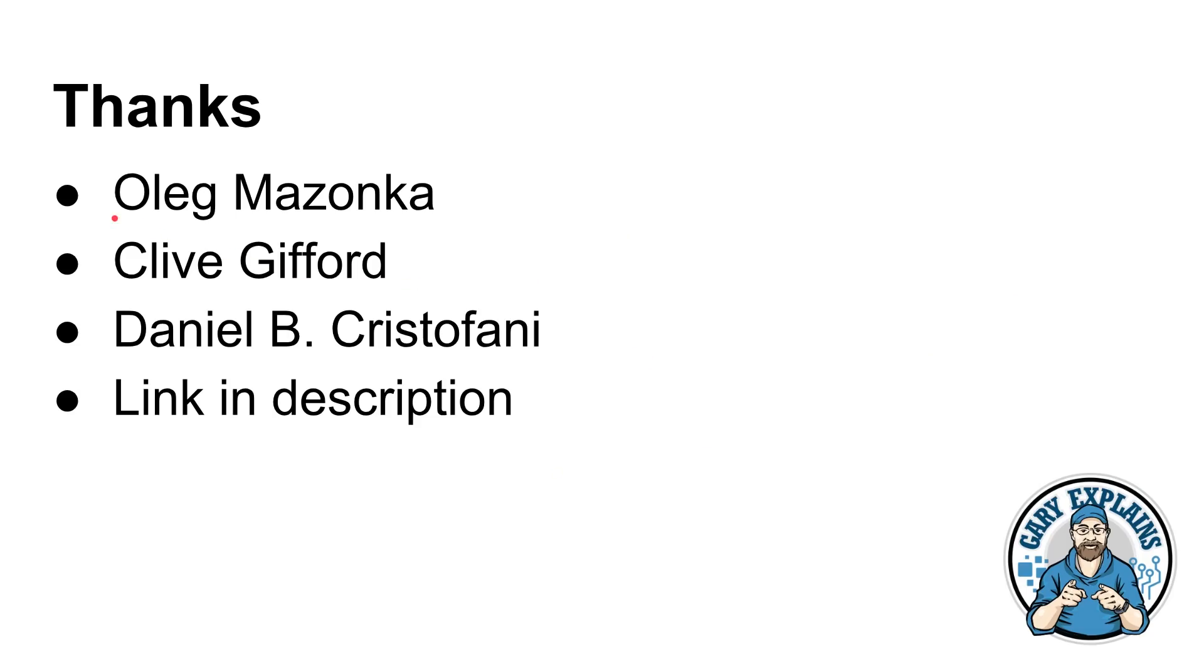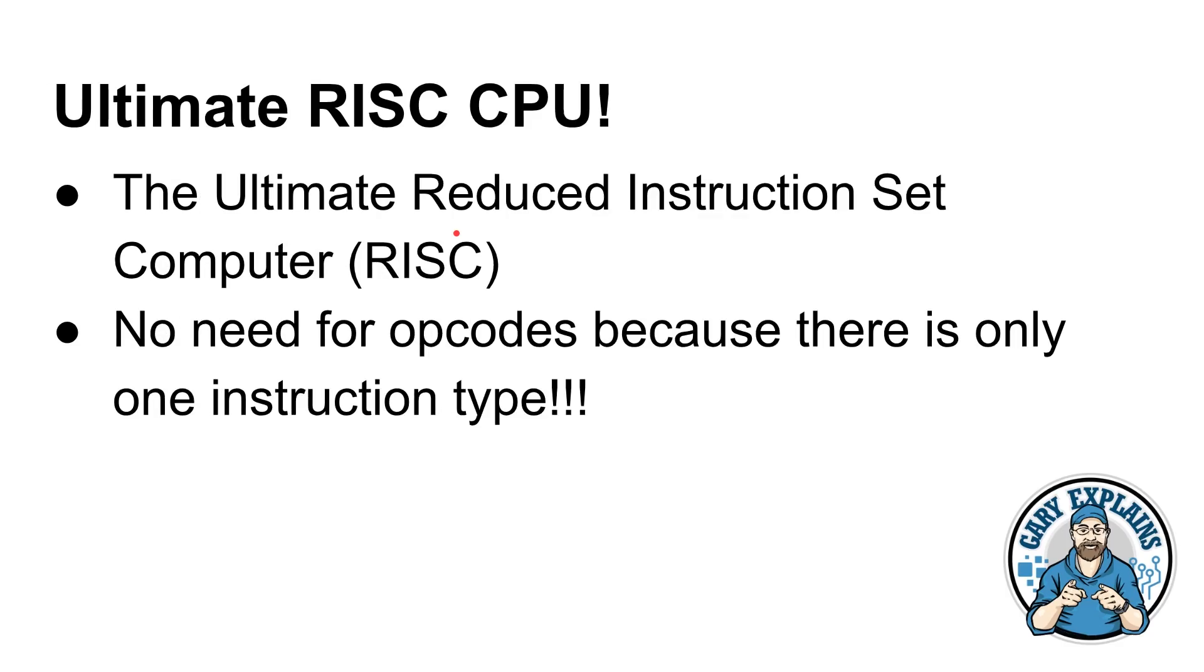If you do subtract a minus number from a positive number, so you get, let's say, four minus minus four, that's the same as an addition. So four minus minus four is eight. So with subtraction, you actually get addition thrown in for free. Also, if you subtract a number from itself, you get zero. So you can set memory locations to zero. The fact that you can do those two things is enough to start building up an entire sequence that mimics other general purpose instructions.